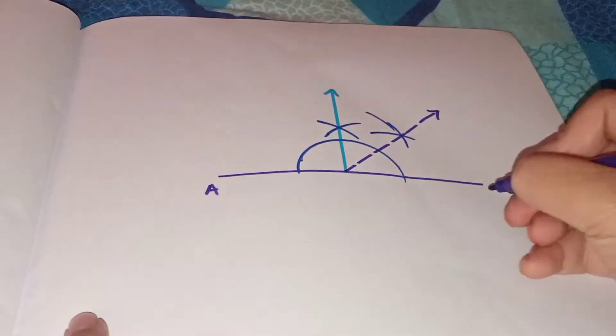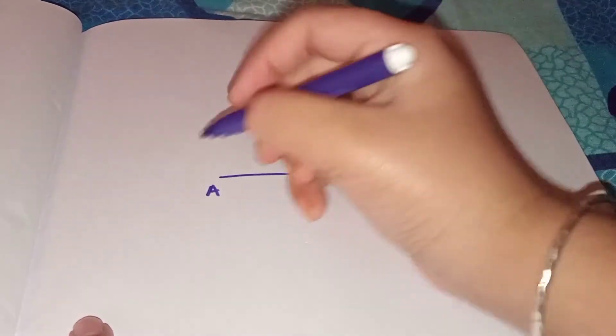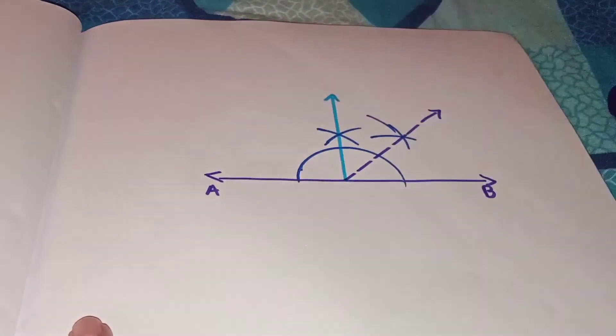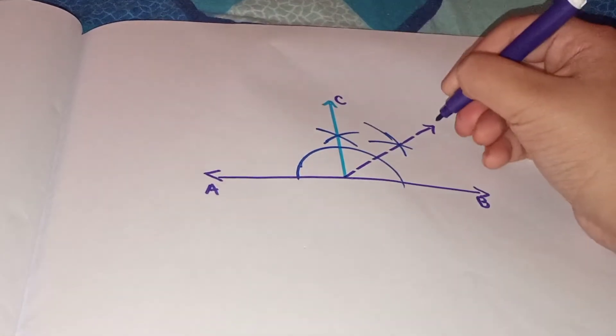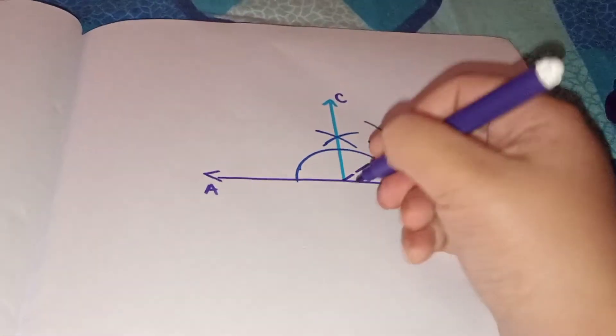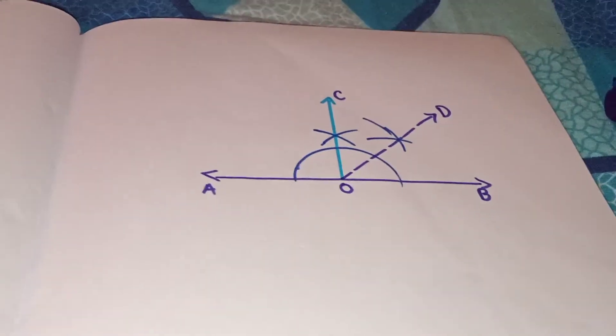So this is your 45 degree and bisector of 90 degree. So two 45 means 45 degrees makes 90 degree, so you can see it has divided it equally.